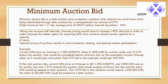Example: current AXN price on Uniswap is 1.5 million AXN per ETH. There is 10 million AXN for auction today and 10 ETH enters the auction — that would be considered above minimum bid by this example's current Uniswap rates, so it would pass untouched. Each ETH bid in this example would get 1 million AXN. If the next auction day, 10 million AXN is up for auction but only 1 ETH enters, that would surpass the minimum bid rate and the extra AXN would be passed to later auctions. The 1 ETH bid would receive 1,650,000 AXN, and the other 8,350,000 AXN would be passed to a later auction.